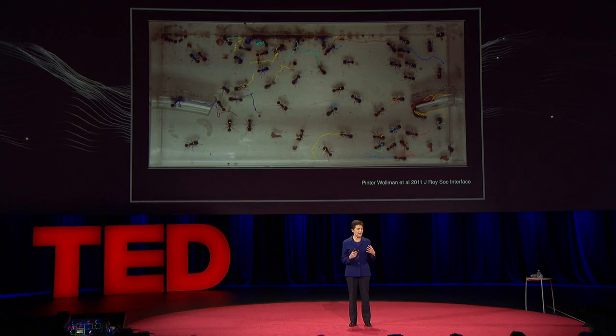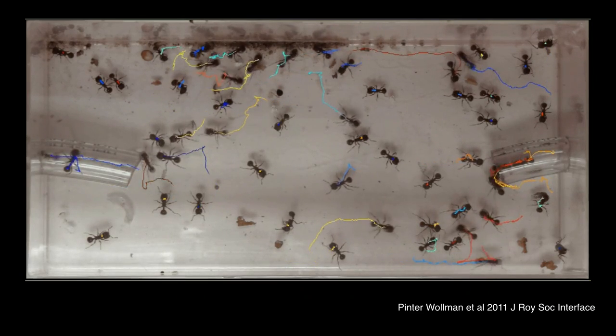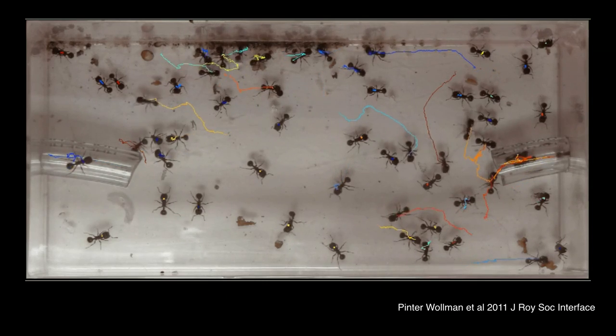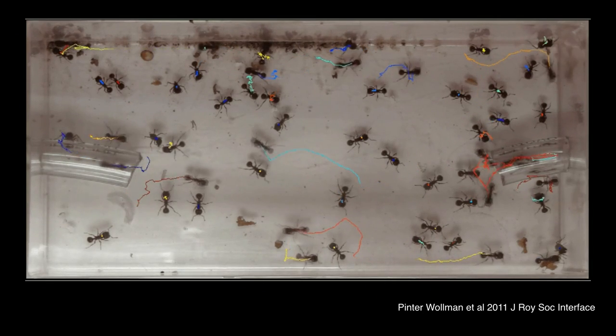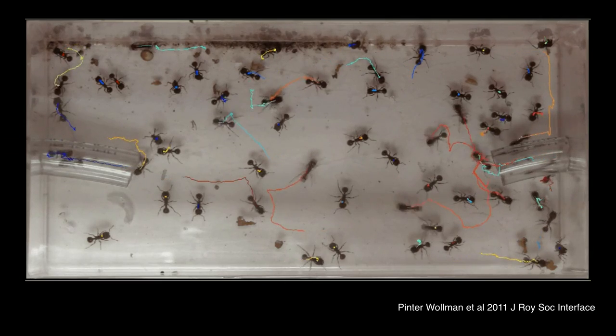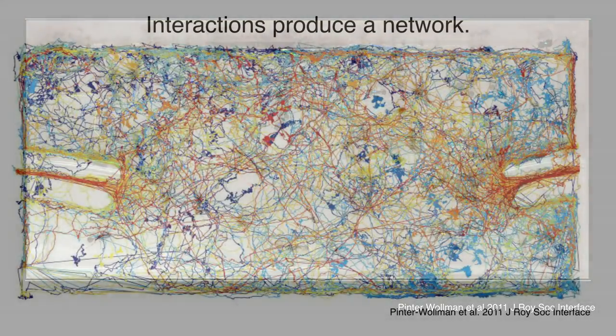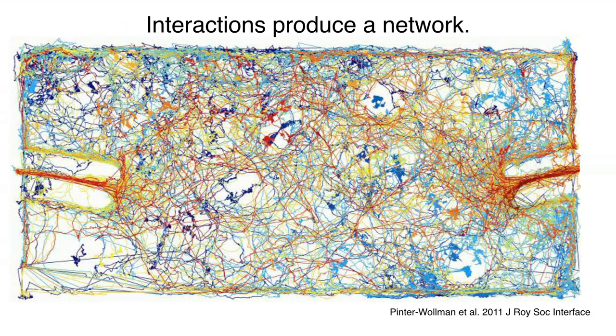Here you see a lot of ants moving around and interacting in a lab arena that's connected by tubes to two other arenas. When one ant meets another, it doesn't matter which ant it meets, and they're not transmitting any complicated signal or message. All that matters to the ant is the rate at which it meets other ants. All of these interactions taken together produce a network — this is the network of the ants you just saw moving around in the arena. It's this constantly shifting network that produces the behavior of the colony, like whether all the ants are hiding inside the nest or how many are going out to forage. A brain actually works in the same way, but what's great about ants is that you can see the whole network as it happens.